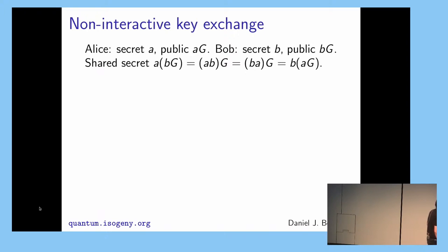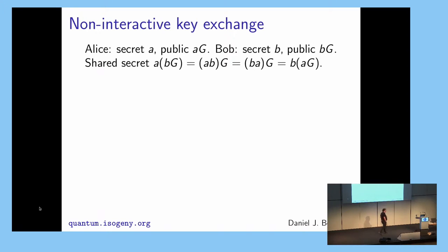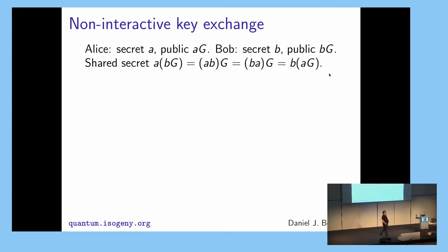And that lets them both agree on some shared secret, which you can write in several ways. Alice takes Bob's public key BG and multiplies it by her secret A to get A times B times G, which is the same as B times A times G, which is the same as what Bob gets by multiplying his secret B times Alice's public key A times G. So they've agreed on the same element of the public key space — a shared secret — which they can then hash and use as an AES-GCM key to authenticate and encrypt all their communications.